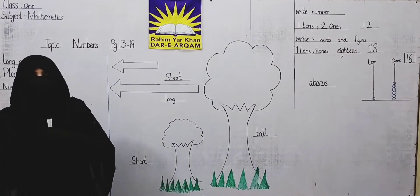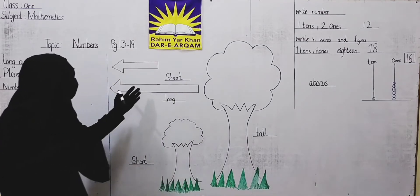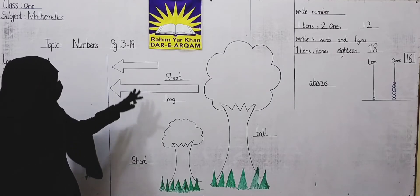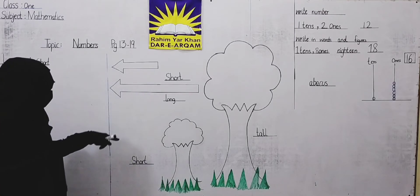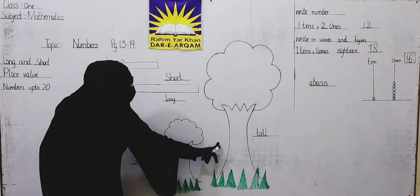For example, this is an arrow. This arrow is short and small. This is long and this is big. This arrow is short and tall.